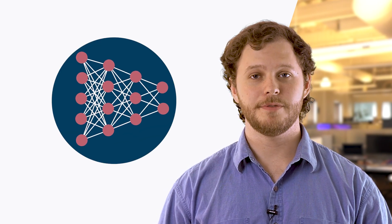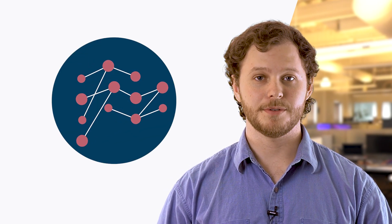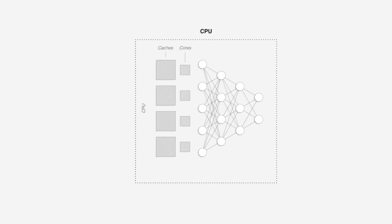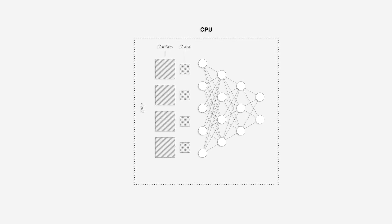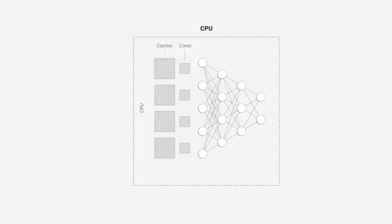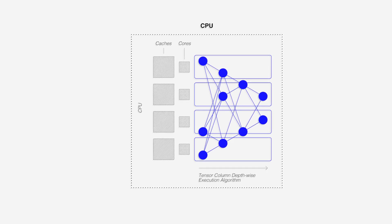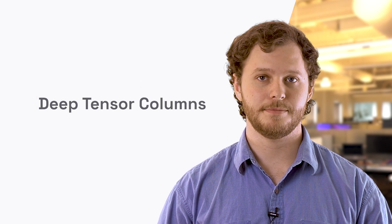This is why Neural Magic was created — to allow for GPU-class performance at CPU scale without those trade-offs. It all starts with the sparsification of machine learning models. But we didn't stop with just the model itself. The DeepSparse engine is a purpose-built inference engine specifically for sparsity. It allows us to take those super-fast CPU cores along with those large, fast caches and execute sparsified models depth-wise, asynchronously, in cache. We call this DeepTensor columns, and it's the combination of sparsified models with the sparsity-aware inference engine that delivers GPU speeds on commodity CPU infrastructure.